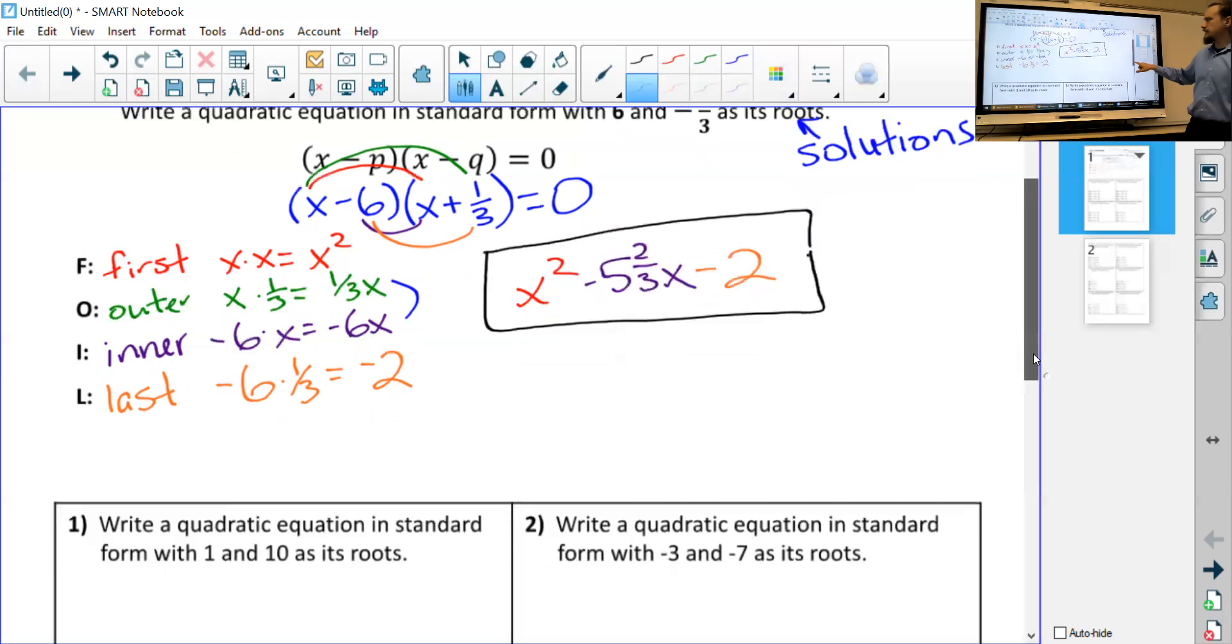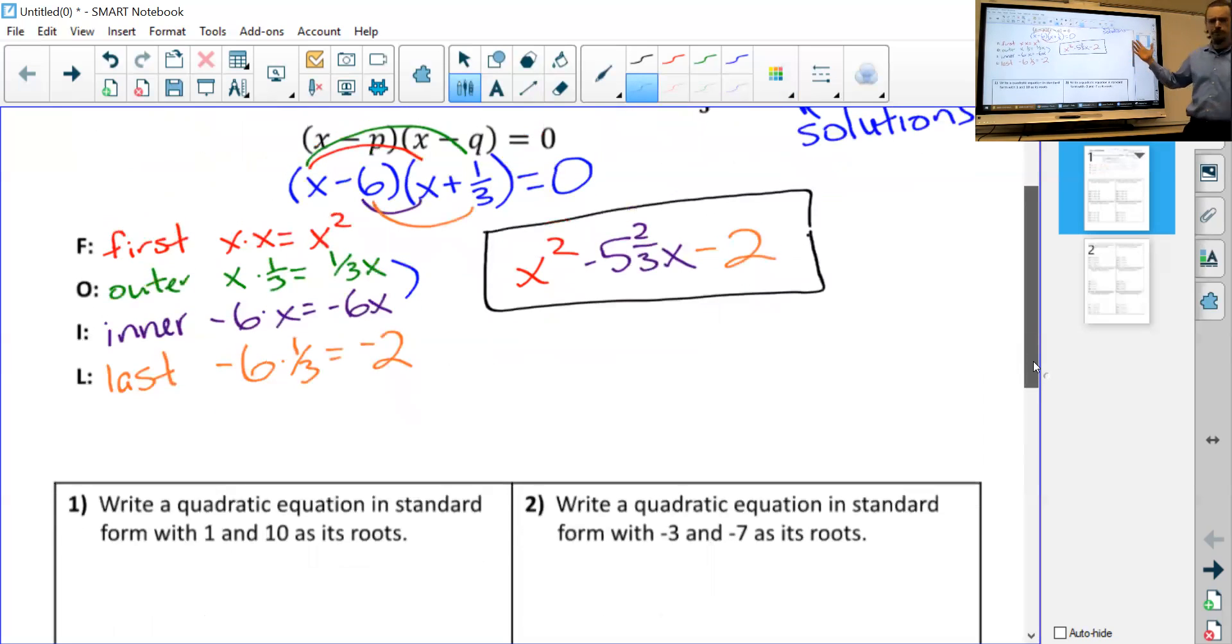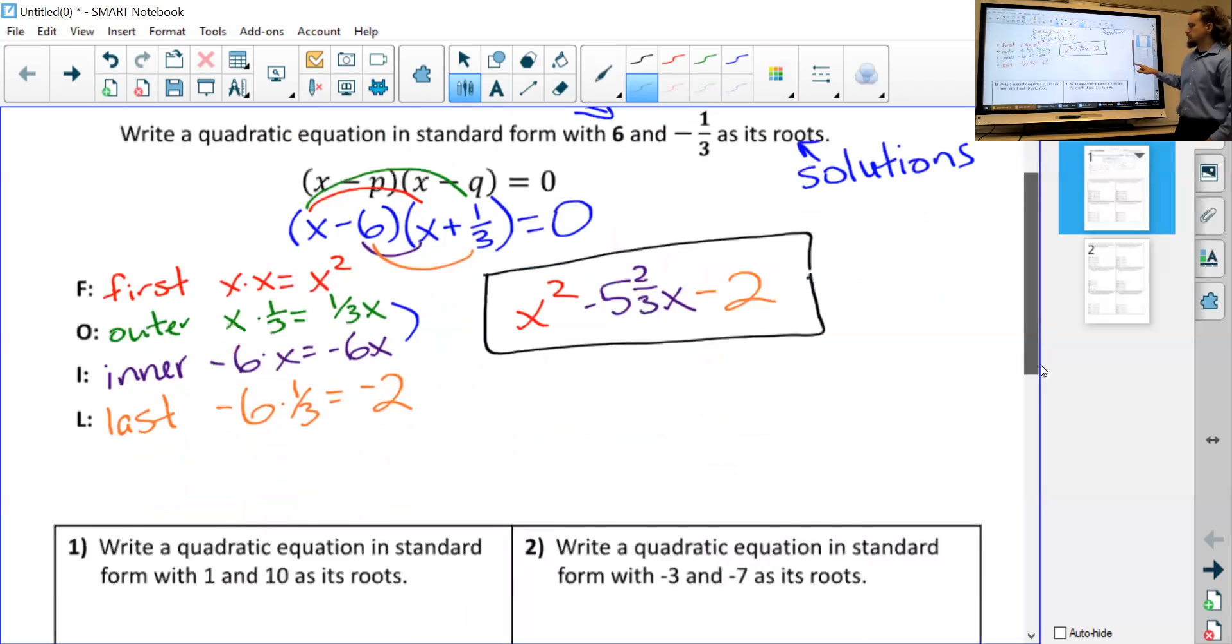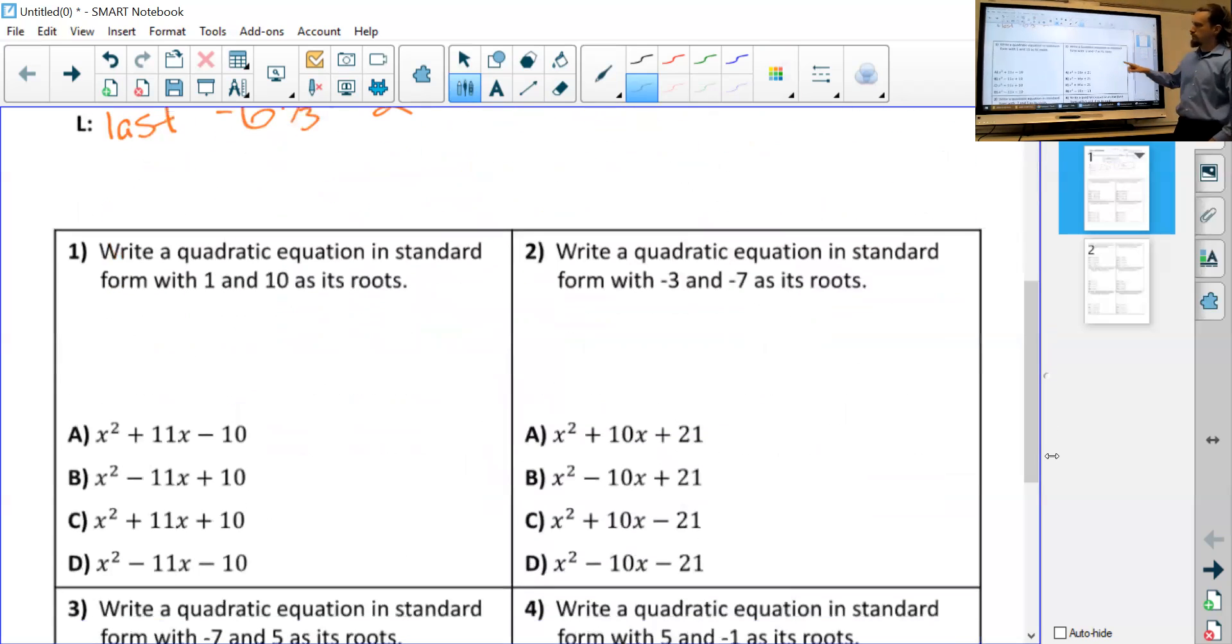Okay. Really the only thing that might cause us some trouble here, assuming you remember how to do FOIL, is this how it's minus P and minus Q. So be careful. So when we do number one, we see our roots are one and 10. So when we write this out, we're going to have X and one, we're going to have X and 10. Remember, it's always going to be minus. So if they're both positive, I'm going to put a minus sign next to both of them.